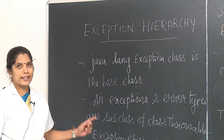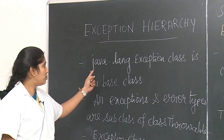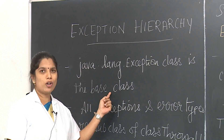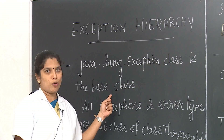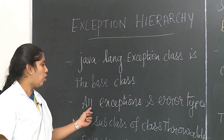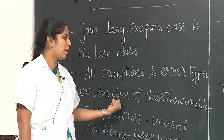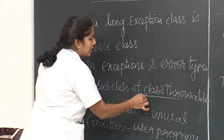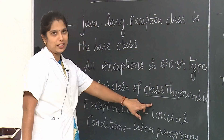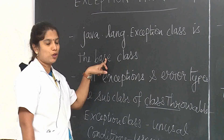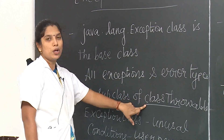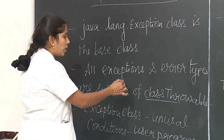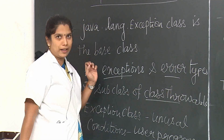The next topic is exception hierarchy. java.lang.Exception is the base class for all exception classes in Java programming. All exceptions and error types are subclasses of the class Throwable. Throwable is the parent class which has two child classes: one is Exception and the other one is Error.